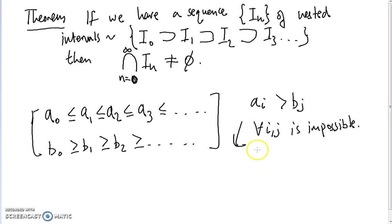The reason why is, well let's say this is true for some i and j. Case one: i equals j, which means a_i is greater than b_i. That's clearly a contradiction because our interval is [a_i, b_i] so a_i by definition is less than or equal to b_i.